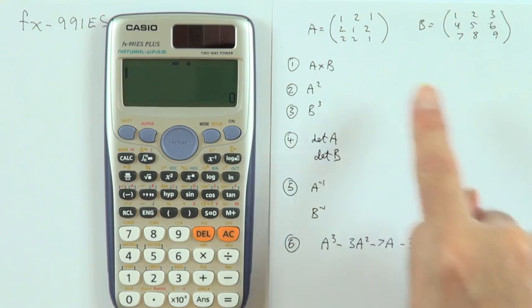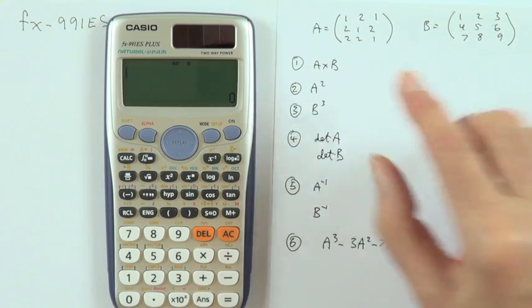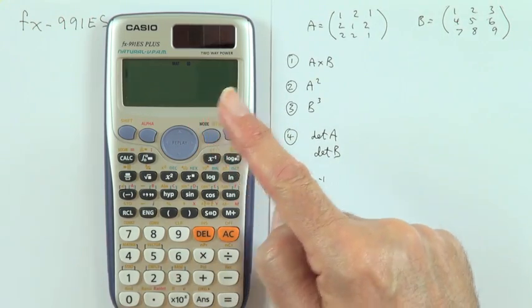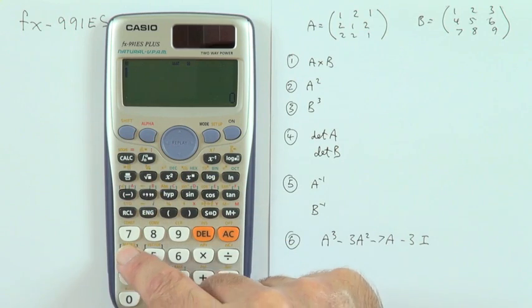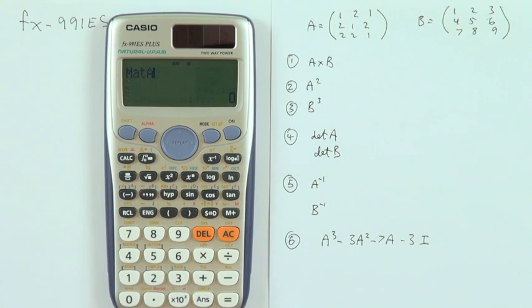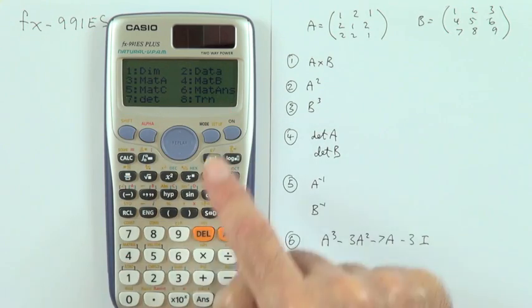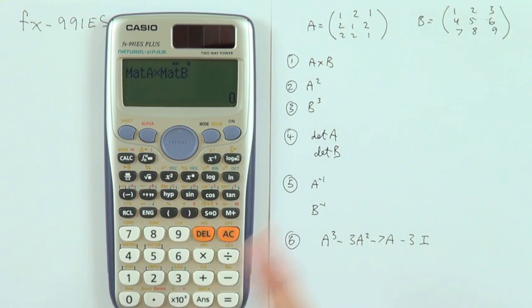And here's where it starts to get handy. It's quite a tedious process multiplying matrices. To do A times B, all I would do would be pop into the matrix, find A, that was three, do multiply, pop into the matrix, find B, that was number four, call it out, press equals, and there's your answer.